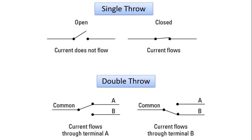Poles tell you how many separate circuits a switch can control. A switch with one pole can direct one circuit; two poles can direct two circuits and so on. Throws indicate how many positions can be activated by the switch. A single throw can close a circuit at one position, whereas a double throw switch can close a circuit in two positions.